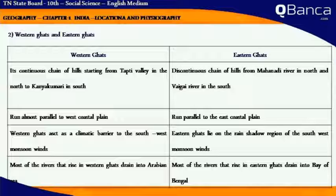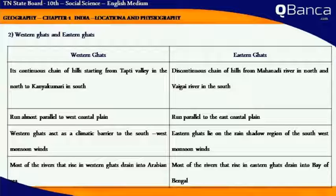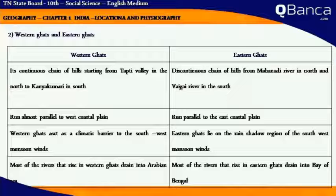Western Ghats run almost parallel to the west coastal plain, whereas Eastern Ghats run parallel to the east coastal plain. Western Ghats act as a climatic barrier to the south-west monsoon winds, whereas Eastern Ghats lie on the rain shadow region of the south-west monsoon winds.